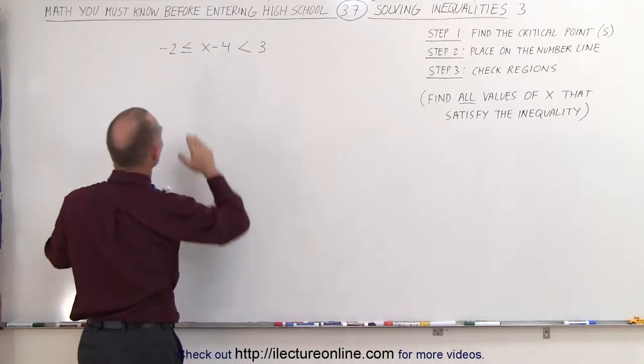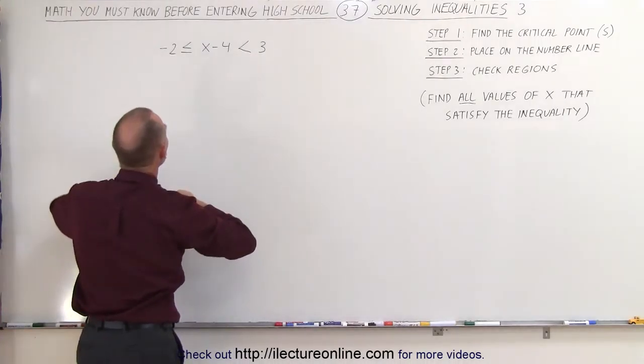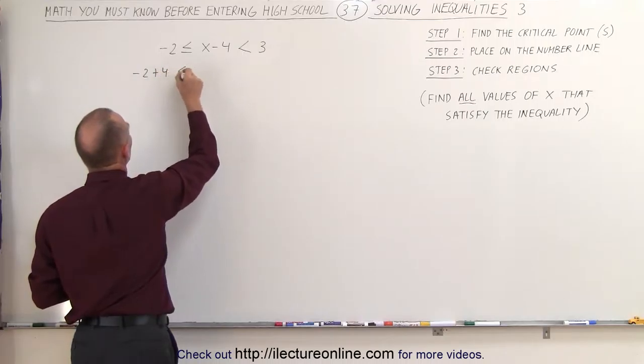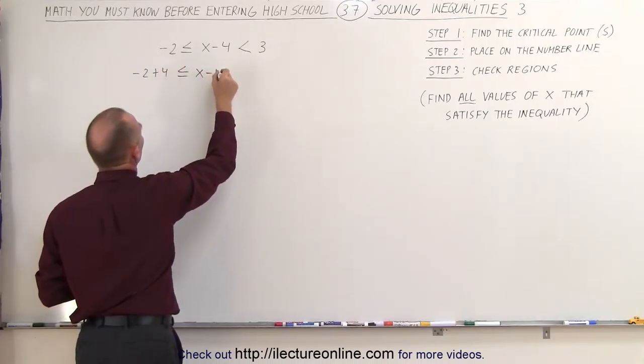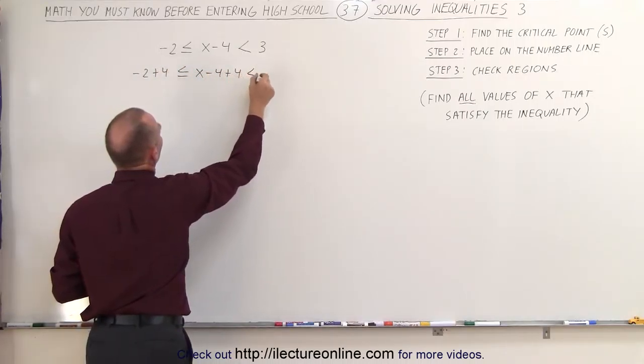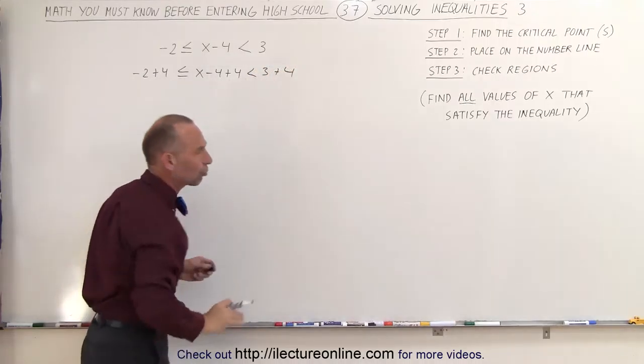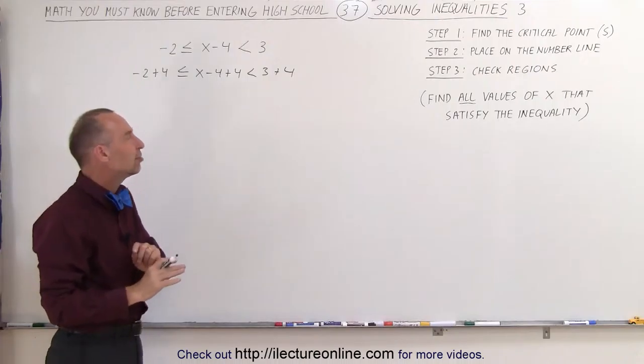So add a 4 to each portion of this inequality. We get minus 2 plus 4, less than or equal to x minus 4 plus 4, less than 3 plus 4. Notice we added a 4 to every portion of the inequality, so we didn't really change anything.